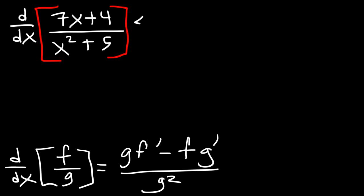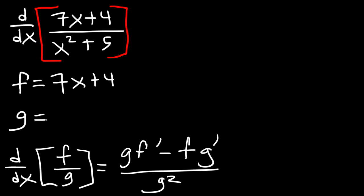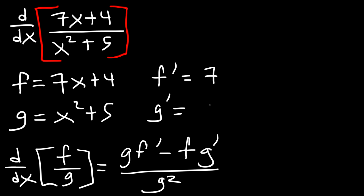So f is the numerator of the fraction and g is the denominator. We say f equals 7x plus 4 and g equals x squared plus 5. So what's f prime and g prime? f prime, the derivative of 7x plus 4: the derivative of 7x is 7 and the derivative of any constant is 0. For g prime, the derivative of x squared plus 5 is 2x.